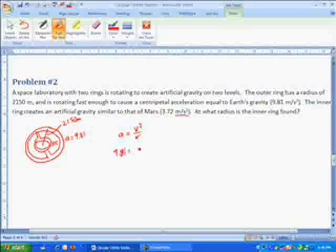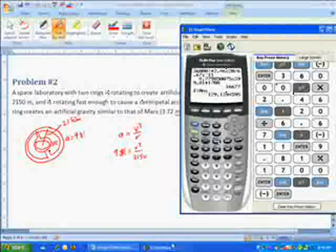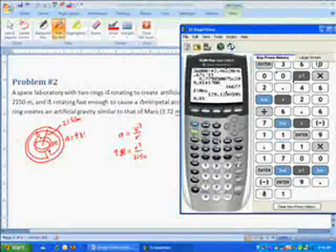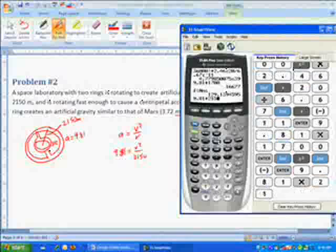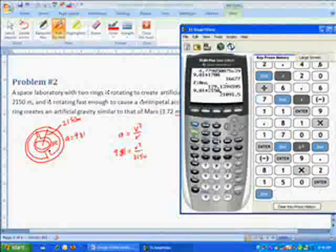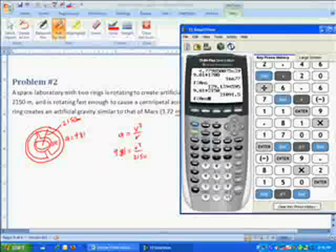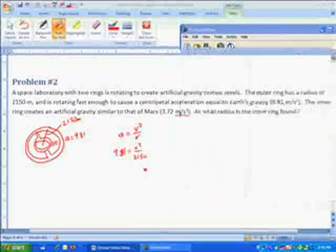So we'll go ahead and solve for the velocity there. So 9.81 times 2150, and then square root that, and so we've got 145.2. So v equals 145.2 meters per second.